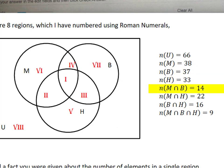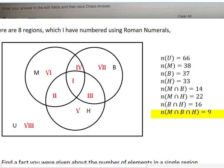The number that likes Mozart and Beethoven, so 'and' is always intersection, M intersect B is 14. M intersect H is 22. B intersect H is 16. And the intersection of all three is 9.